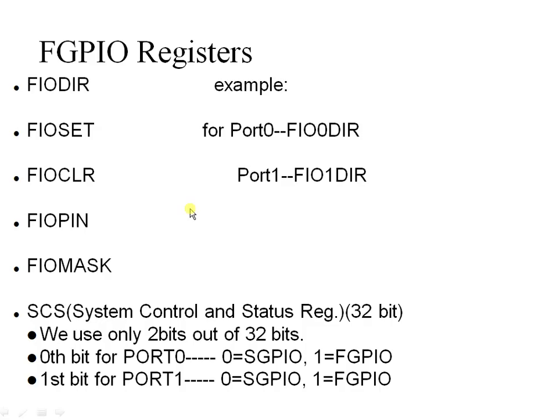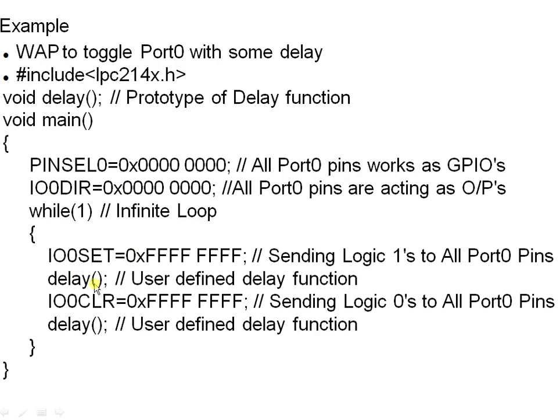Coming to fast GPIOs: the GPIO block is divided into fast GPIOs and slow GPIOs. Up to now we discussed slow GPIOs. For fast GPIOs, there are equivalent registers: fast direction register, fast set register, fast clear register, and fast pin register. Additionally, fast GPIOs have a mask register not present in slow GPIOs.